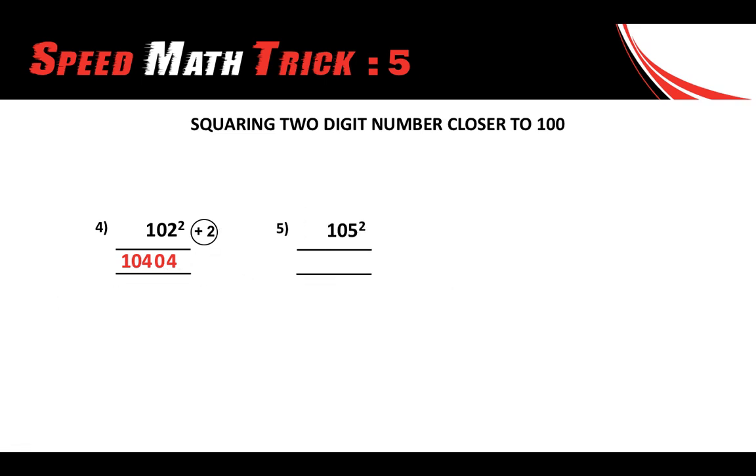Let me take one more example. Now let's square along with me. The difference between 105 and 100 is plus 5. Squaring plus 5 gives you 25, and observe it is not a single digit so we are not going to put any 0. And the last step, 105 plus 5 will give you 110.